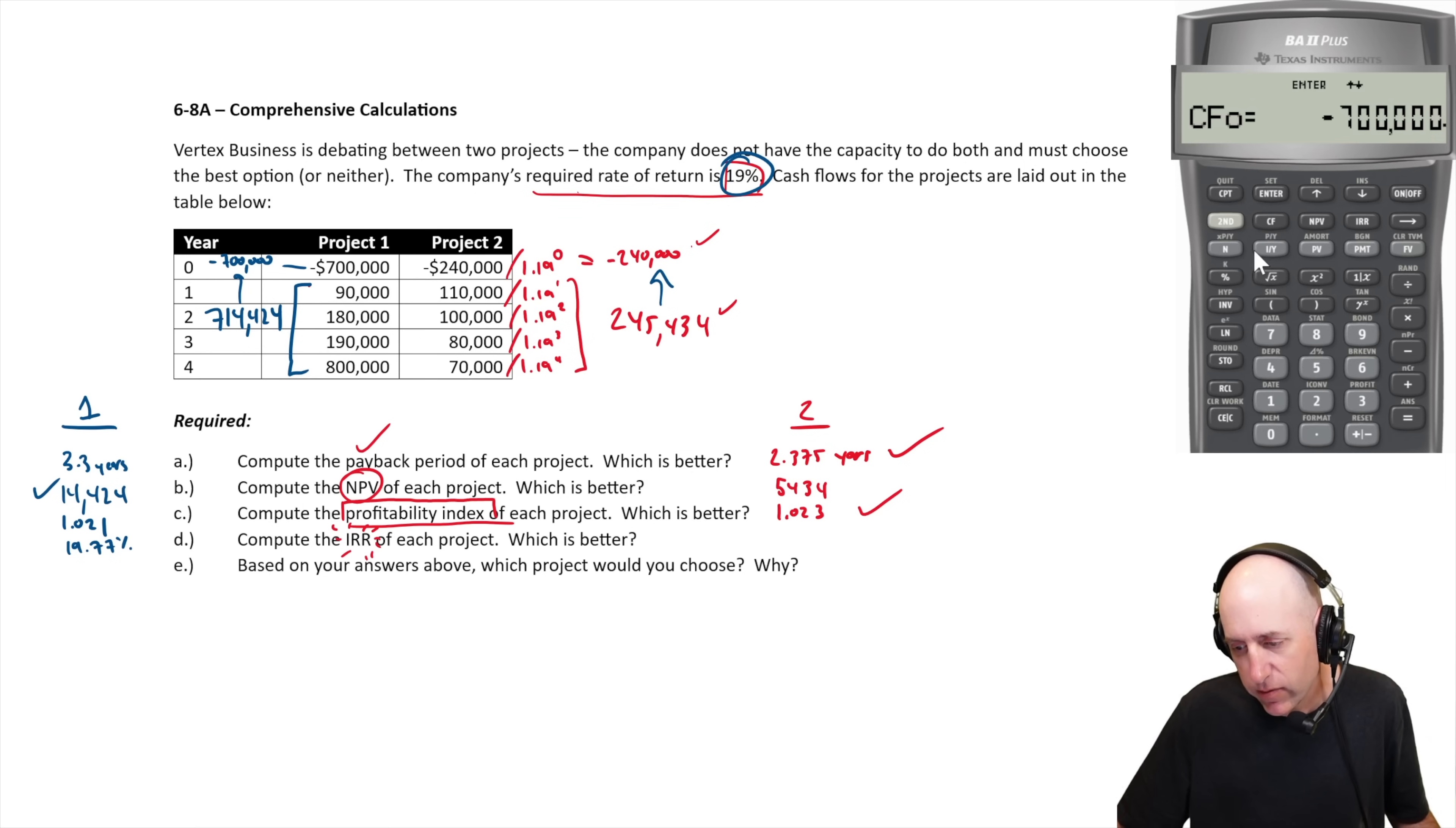I'm going to reenter some cash flows. So clear what's in there. And I'm going to enter the cash flows for project two, 240,000 negative. Enter cash flow at time one, 110. Enter cash flow at time two, 100. Enter. And remember the F that I'm sort of skipping past is frequency. And because these are cash flows that only occur once the frequency is one and that's the default. So I'm just skipping right past it. 80,000 for cash flow at time three and 70,000 for cash flow at time four. And then I go IRR compute and I get 20.28%, 20.28%.